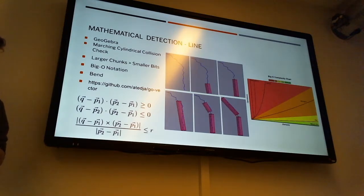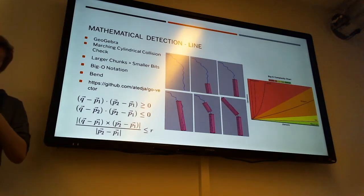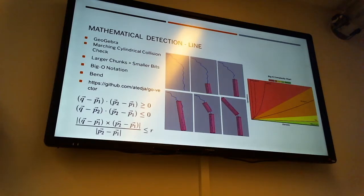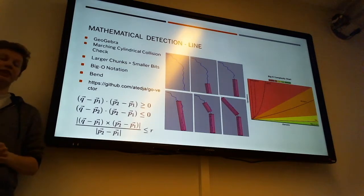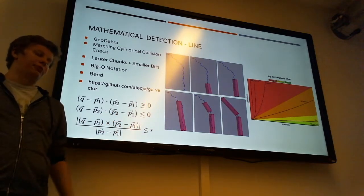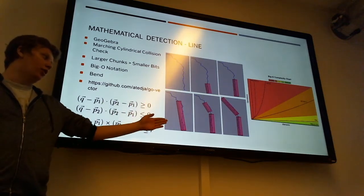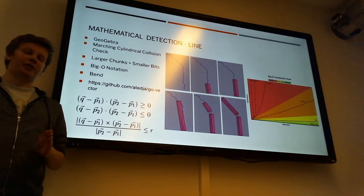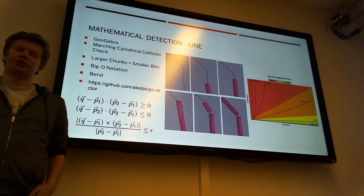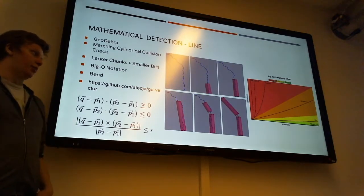There are a couple reasons why we do chunks instead of just detecting every single point. First of which is that there are like 15,000 points, and so not only is it a little bit computationally intensive, but it is very computationally intensive, because for each step that we take, we have to check all of the different points, and so if you can just lower the amount of steps, then you lower the computational processing time.